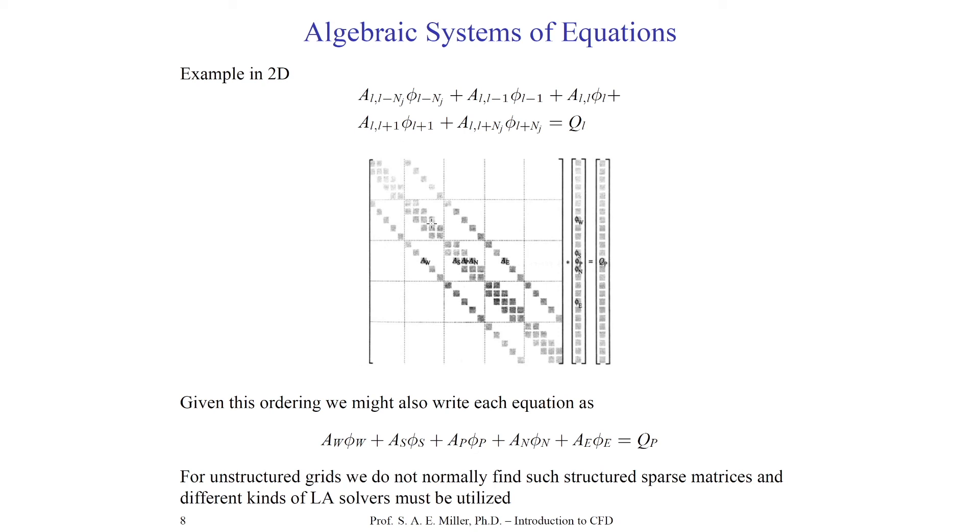Let's now turn our attention to ways to solve A phi equals Q. Our objective of the discretization approach is to find the coefficient matrix A and the boundary conditions which affect Q. Now that we have this problem set up, we need to develop a solver. Previously, we talked about solvers for nonlinear and linear equations that march in time or iterate to a steady solution. These linear algebra solvers may find the solution of the PDE with a single type of operation.